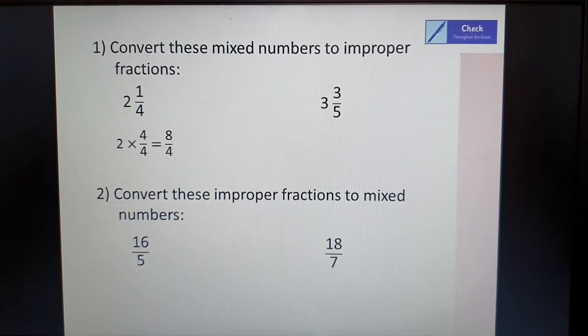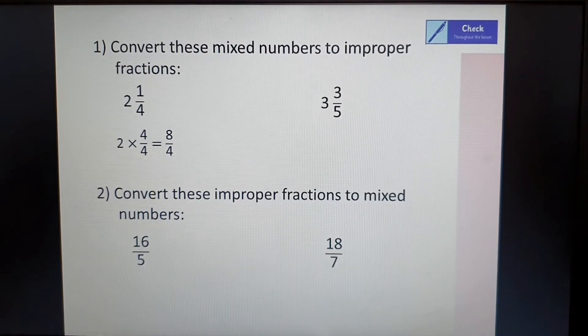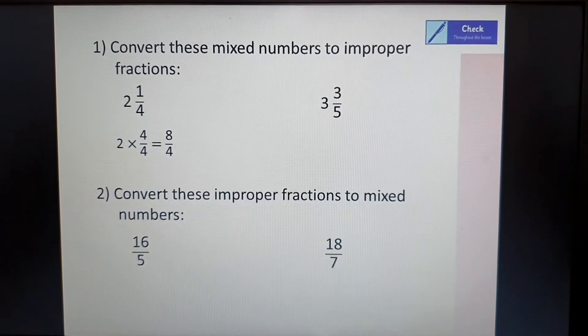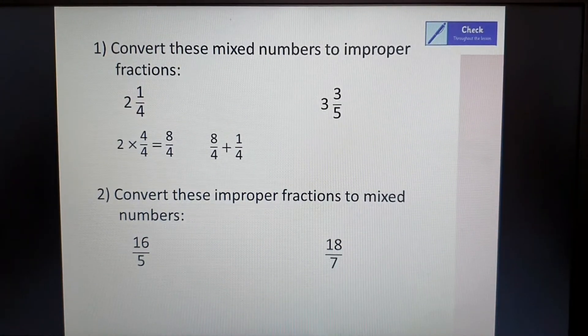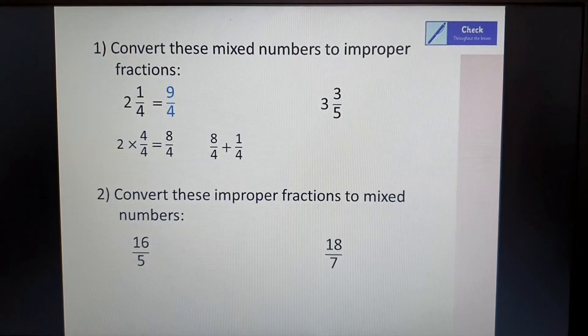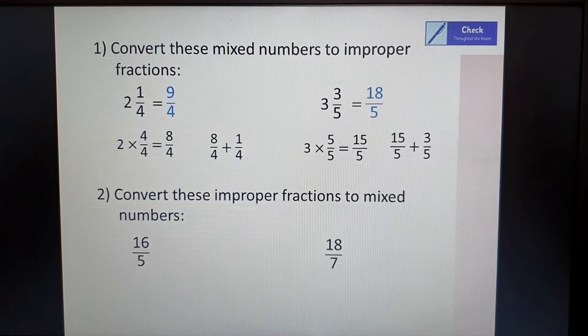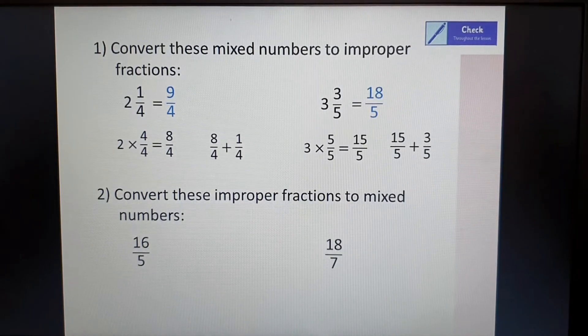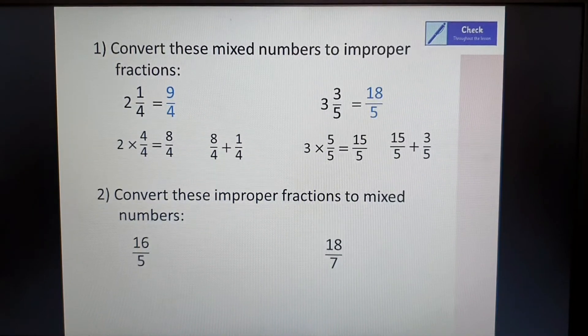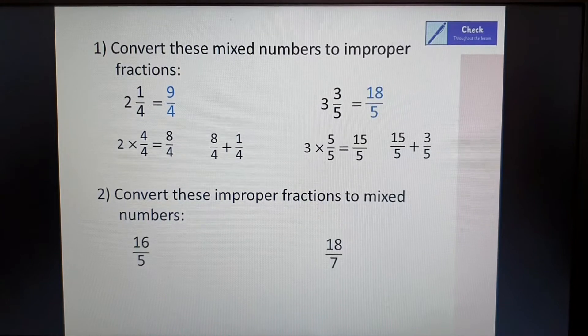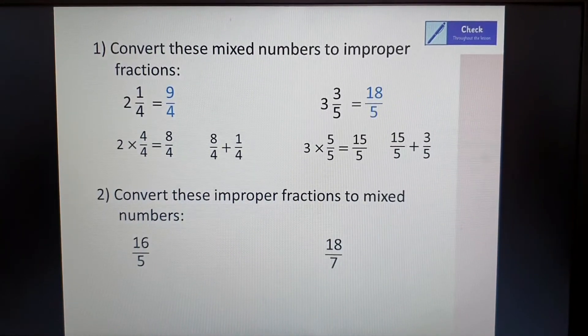Within the two wholes there would have been four quarters in each one. So we need two lots of those which have been eight quarters. We then also need to add on the one quarter and it would have given us nine quarters. Second one, again we needed to do three lots of the five out of five which would get 15 fifths. Add the 15 fifths to the three fifths that are already there and you've got 18 fifths.